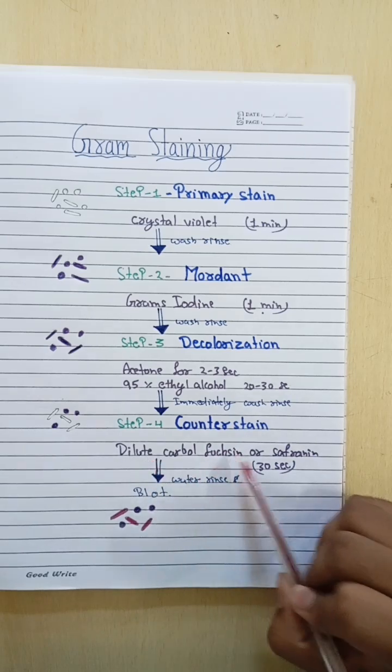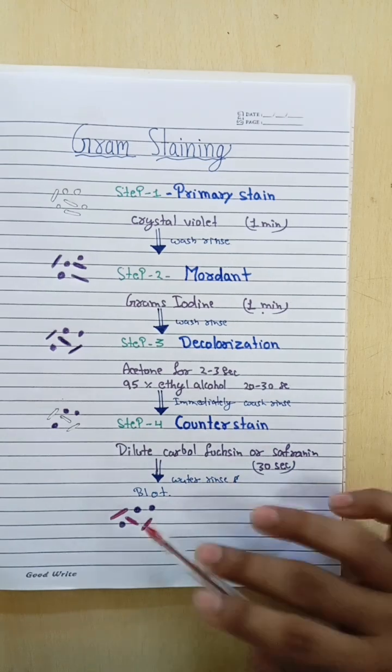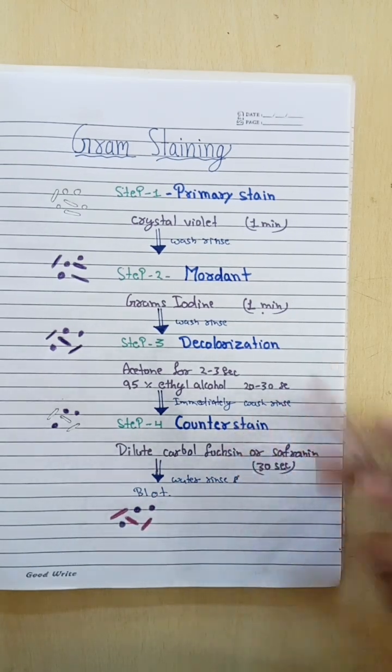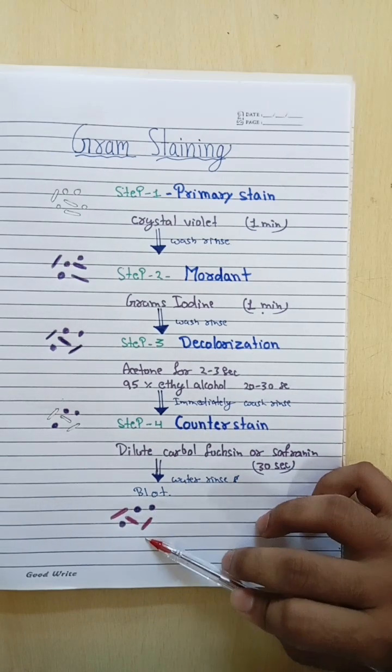Step four is counter stain. Dilute carbol fuchsin or safranin we have to keep for thirty seconds, then wash, then blot and see under the microscope. Bacteria and cocci look violet in color.